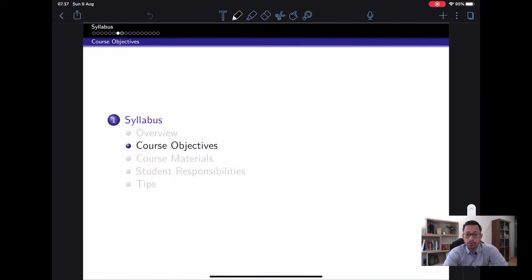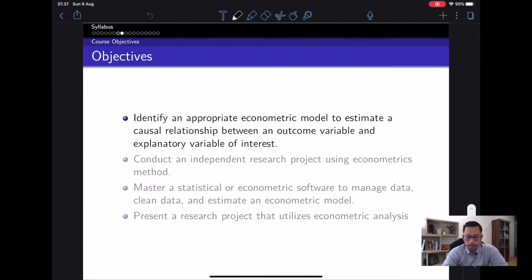Let's go through some of the course objectives. The first one is to identify appropriate econometric models to estimate a causal relationship between an outcome variable and an explanatory variable of interest. Second is to conduct an independent research project using microeconometrics methods.